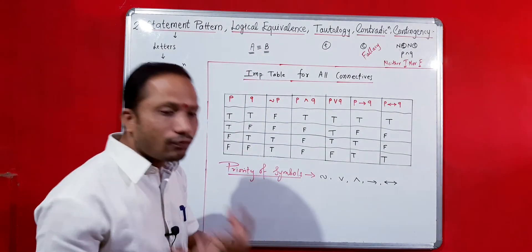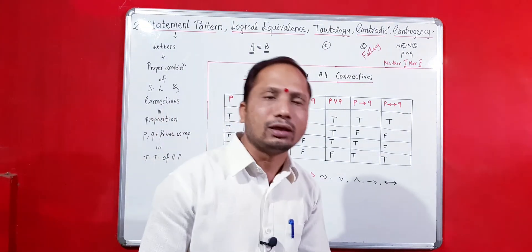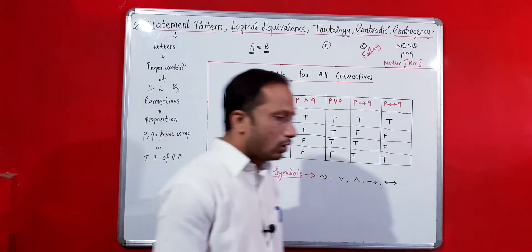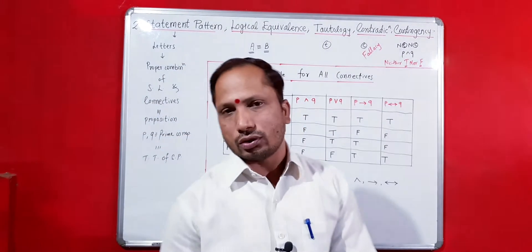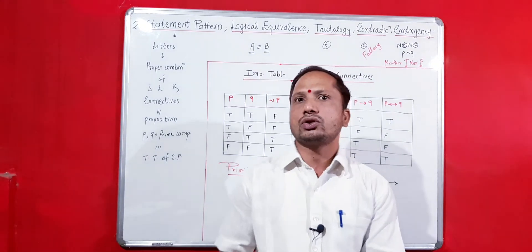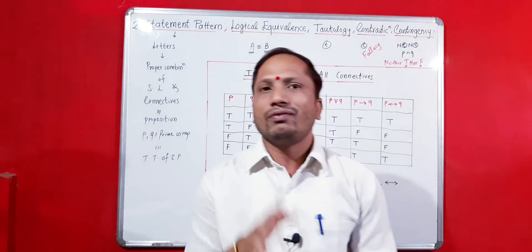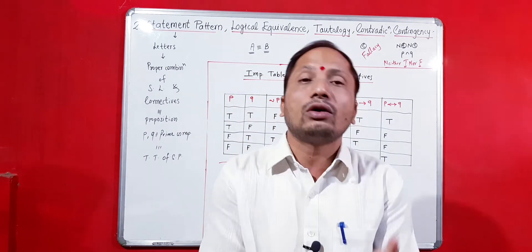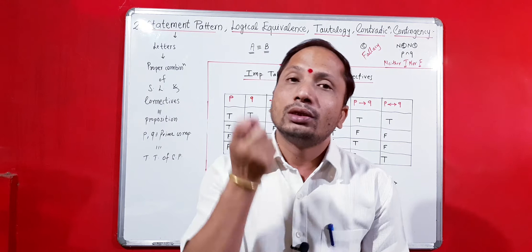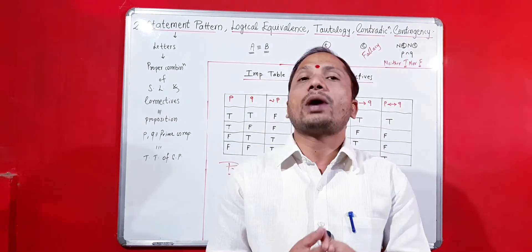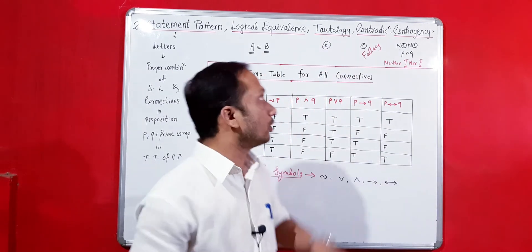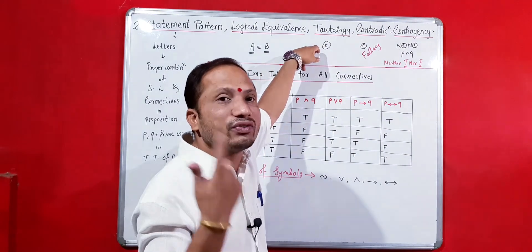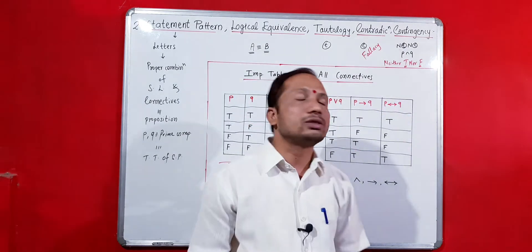Tautology: whenever the truth values of the final combination of the statement patterns are all true, then that type of statement pattern is known as tautology. A small 't' is used to represent tautology.